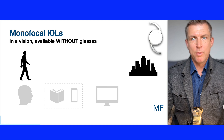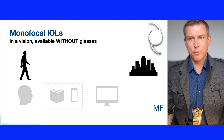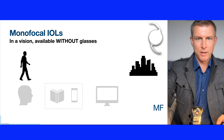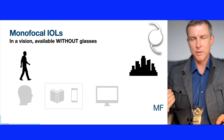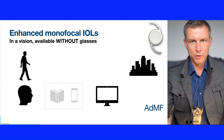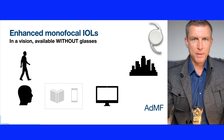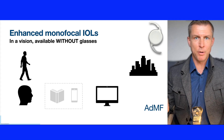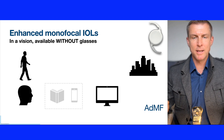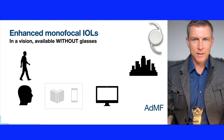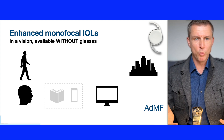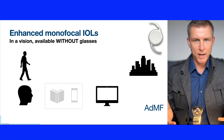The monofocal IOL provides only one focal point, one fixed distance — normally far vision. However, sometimes it can be calculated for sharp near vision, but it's still only one focal distance. The next IOL type is the enhanced monofocal lens. It provides improved intermediate vision, sufficient for tasks like shopping, doing something by hand, cooking, working in a garage, and working on large-screen computers.